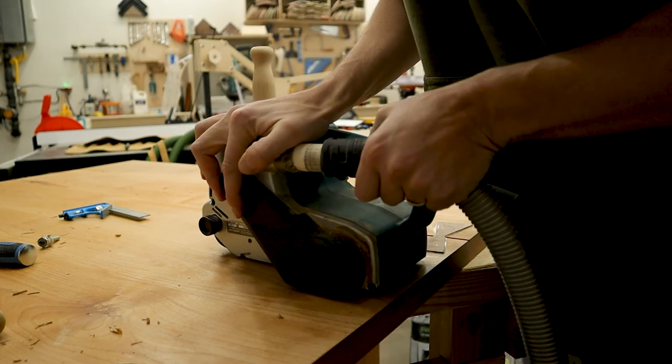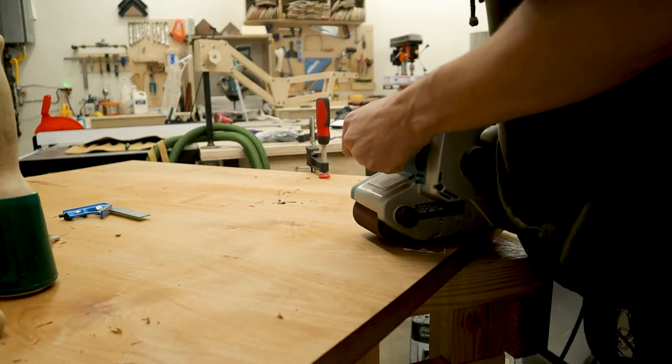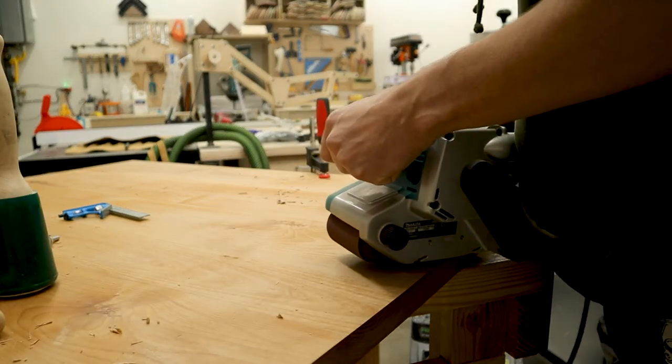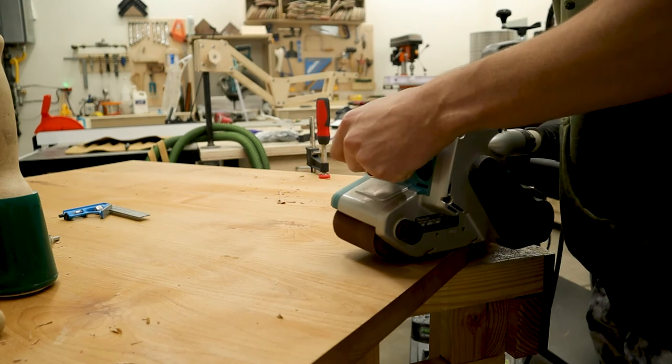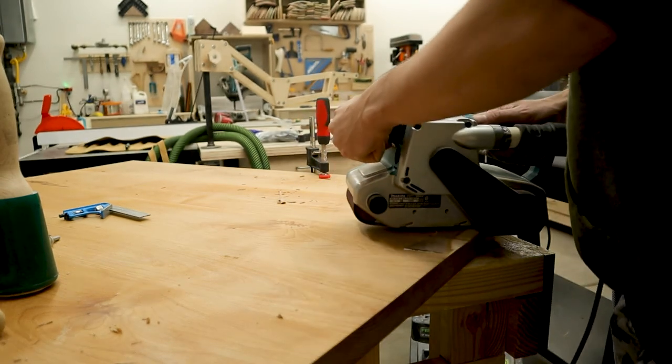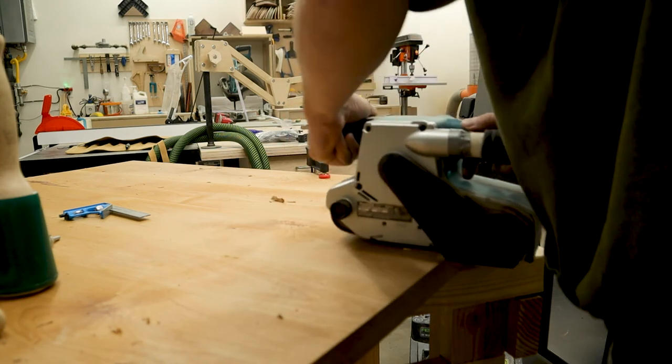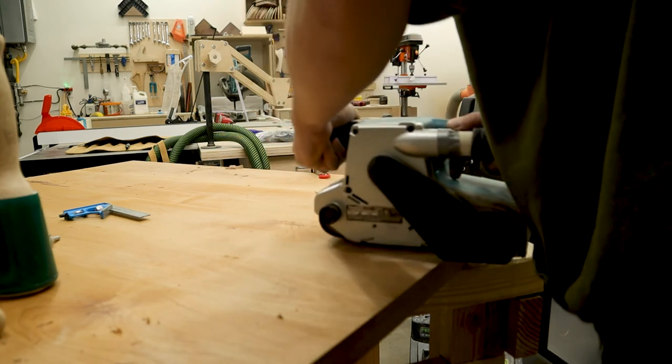So the belt sander will quickly flush up the bow tie. You just have to be careful, it eats a lot of material really quickly. You can see I'm tilting it back a little bit because it's kind of precarious balancing on that little piece. I kind of gouged the edge of the table but once it's all sanded you won't see it.